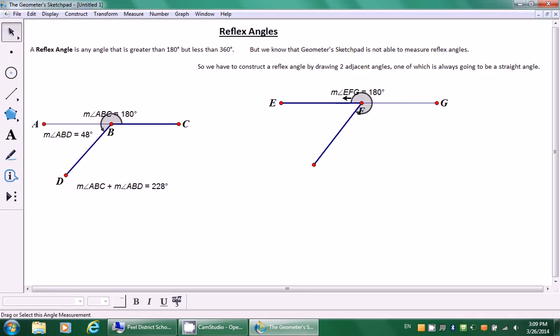So I'm going to change this line. Go to display, line style, thin, display, line style, solid. There we go. So I've already measured the 180 degree angle. You know I don't have to measure this because this is the reflex angle here. So it's this angle I have to measure.